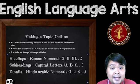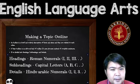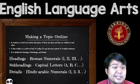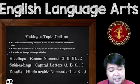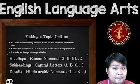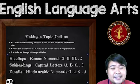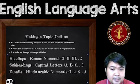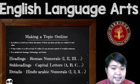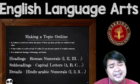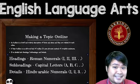Headings are like your main topics — the main ideas of your research or of whatever it is you're writing about. Subheadings are the smaller ideas that support the main ideas. And details are, well, details — the details of the different subheadings.